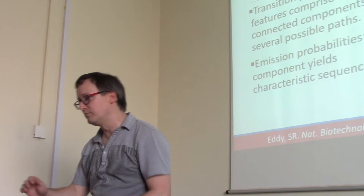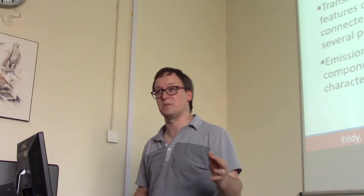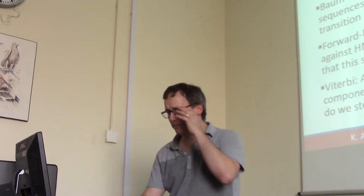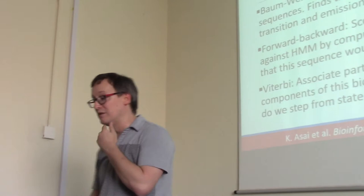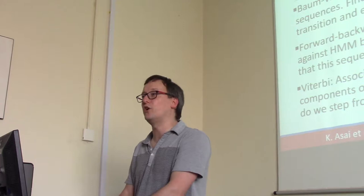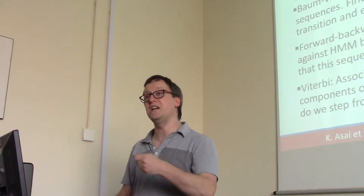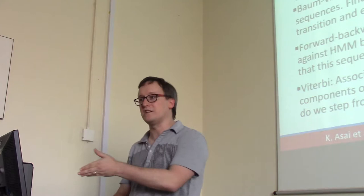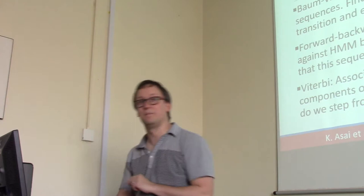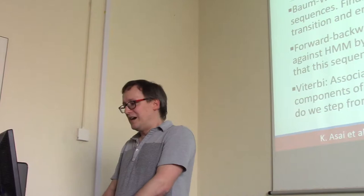Because this is bioinformatics, we can't leave hidden Markov models without mentioning the algorithms we use for dealing with them. We start with Baum-Welch. Baum-Welch is an algorithm we use when we have a whole bunch of examples of some biological feature in sequence, and we want to train the model on what all those probabilities should be for moving within the model and for emitting a particular letter of sequence. So Baum-Welch trains the model when we have sequences to which we're going to apply it. Next up, we have the forward-backward algorithm.